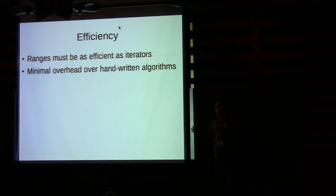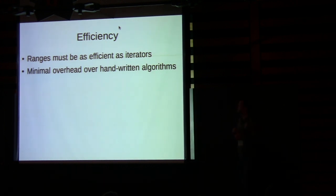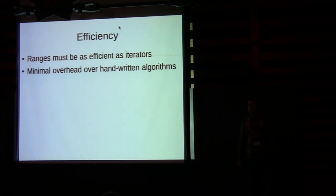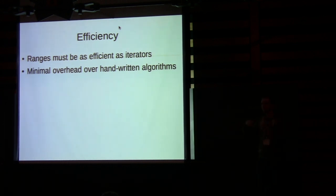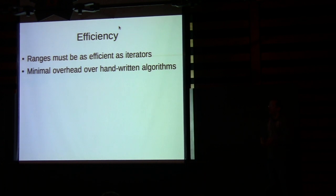Next goal: efficiency. The hard goal is we need to be at least as efficient as the current STL — that's achievable. Like the STL, we want minimal overhead over handwritten algorithms, which is a little harder. As Eric showed in his blog posts, in some cases the iterator abstraction is actually problematic and a different abstraction generates more efficient code. For instance, the C-string range with classical iterators generated horrible code for string length, but with a proper sentinel or a range abstraction, the generated code is much better.